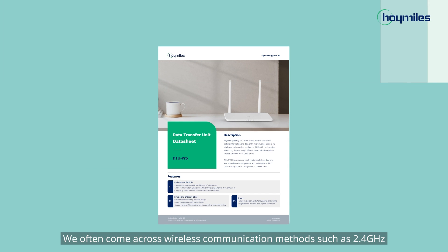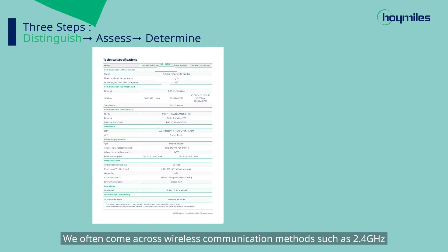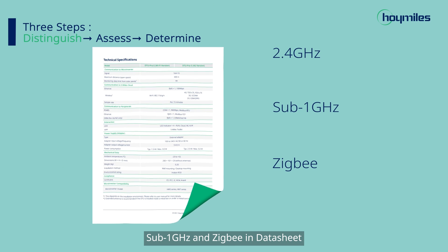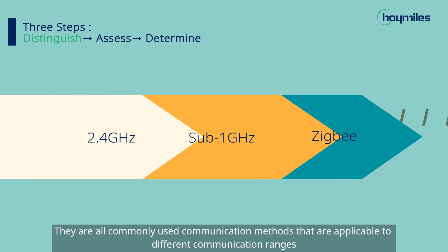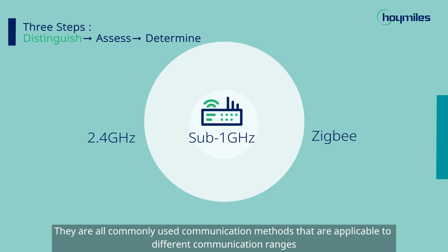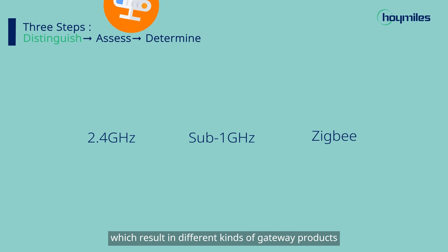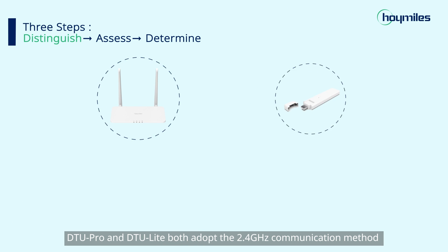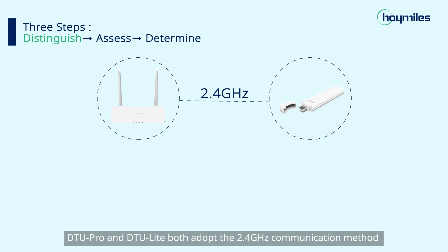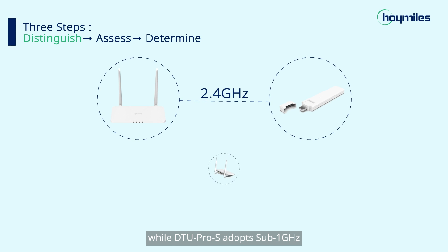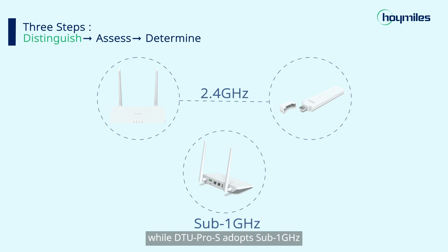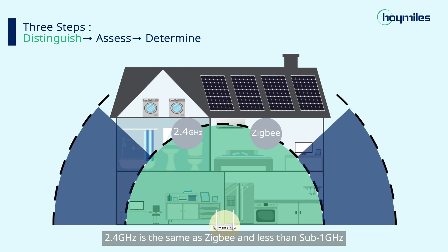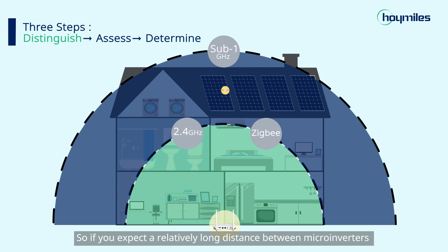We often come across wireless communication methods such as 2.4 GHz, Sub-1G, and Zigbee in datasheets. They are all commonly used communication methods applicable to different communication ranges, which result in different kinds of gateway products. For example, DTU-Pro and DTU-Lite both adopt the 2.4 GHz communication method, while DTU-Pro S adopts Sub-1G. In terms of range, 2.4 GHz is the same as Zigbee and less than Sub-1G.